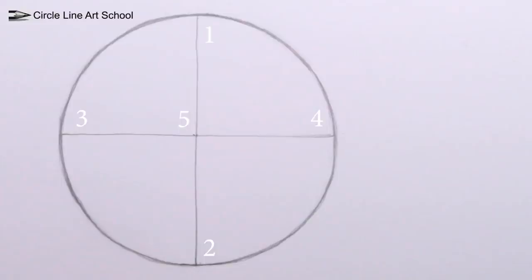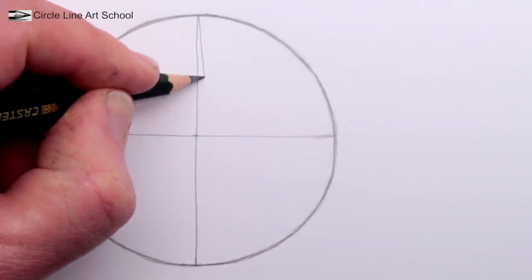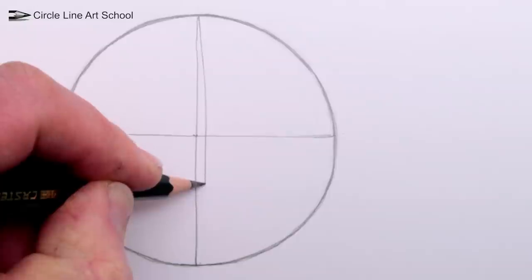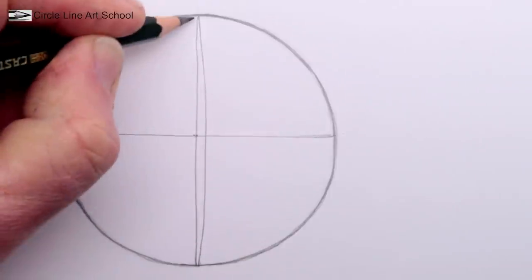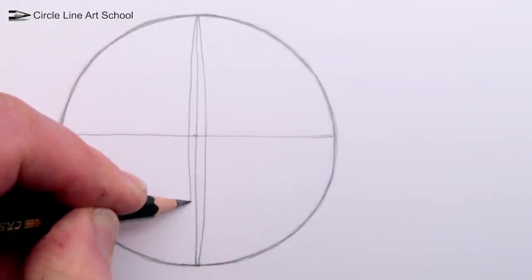Next we need to draw a curved grid on our circle. Start by drawing a curved vertical line from the top vanishing point to the bottom vanishing point. These curves should get more curvy as they reach the outer circle of our circle.